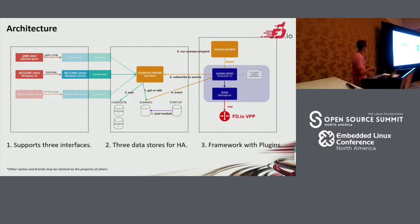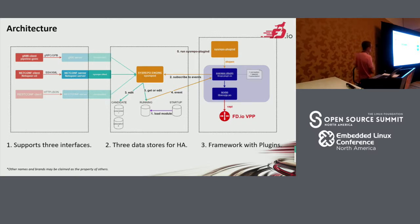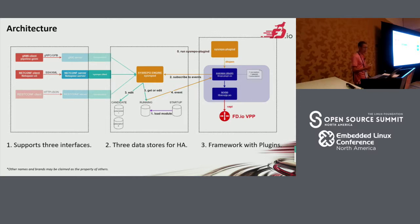This is the software architecture. It contains three key parts. We will explain it from the left to the right. On the left side, it supports three software interfaces. One is gNMI. The gNMI contains two parts: one is the gNMI client, another is the gNMI server. The gNMI client will communicate with the gNMI server through the gRPC protocol and the Google Protocol Buffer.